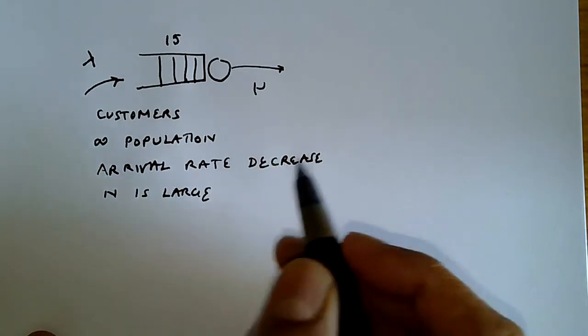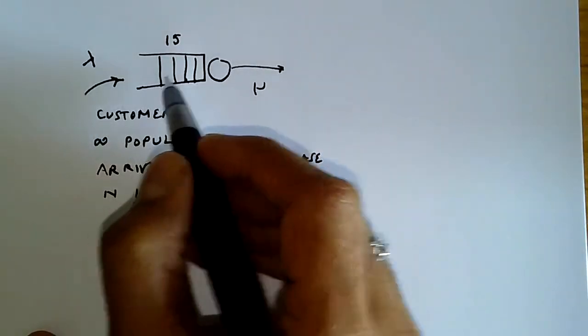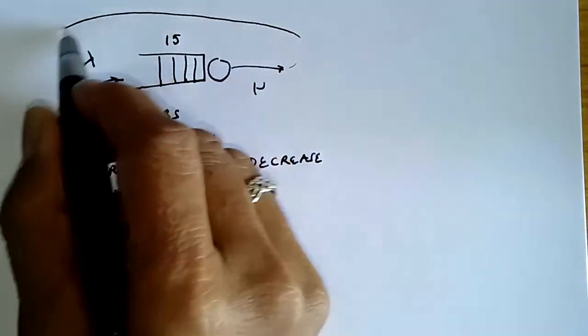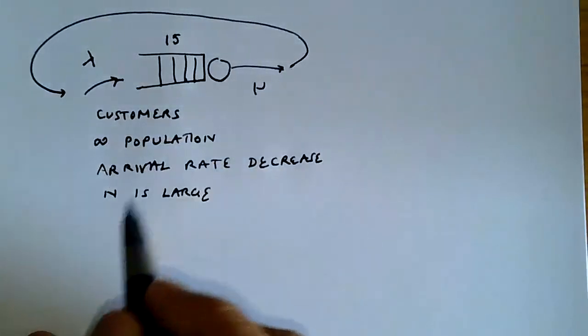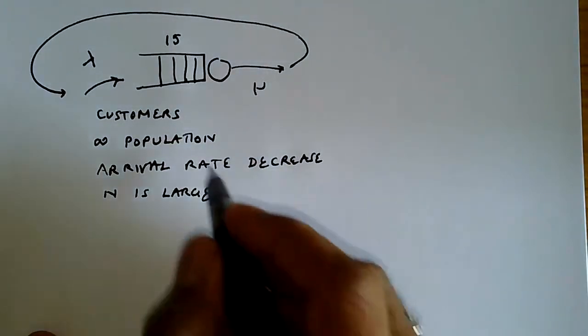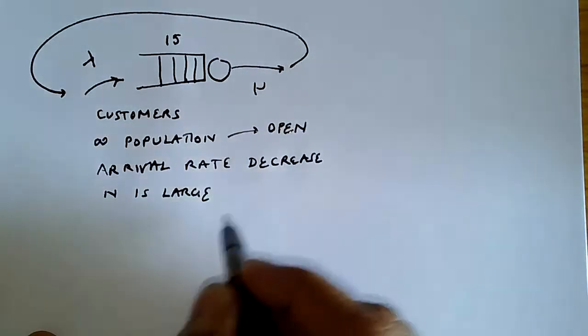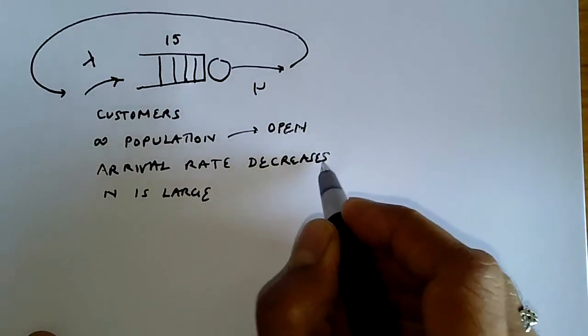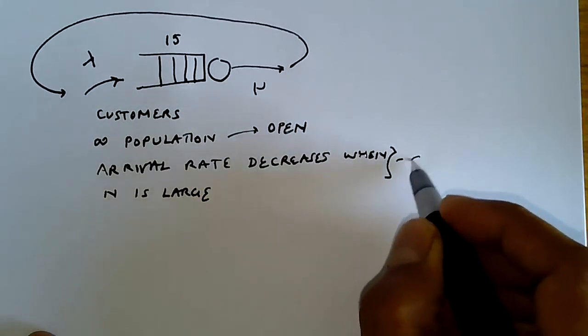This typically arises in a population where the customers arrive, receive service, and then go back into the system again to get service later on. When you have an infinite population, we call this an open system. When the arrival rate decreases when N is large, this is called a closed system.